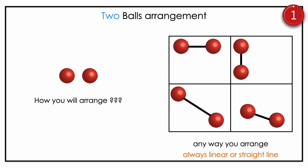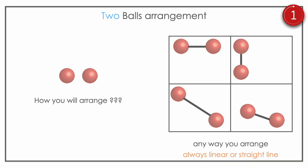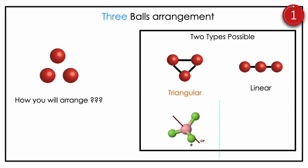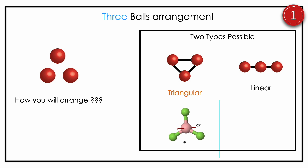Let us analyze some situations. If you are having two atoms — consider them as two balls — any way you arrange them, you get a straight line. It is the two-atom category; you will always get a straight line. If you get three atoms, it can be a trigonal planar arrangement or linear. These are the two possibilities — nothing more.